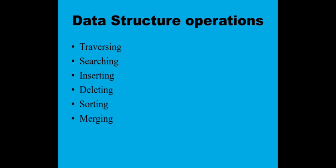So these are the six data structure operations: traversing, searching, inserting, deleting, sorting, and merging. These are only two-line explanations and you will find them on page number 34 of your textbook.